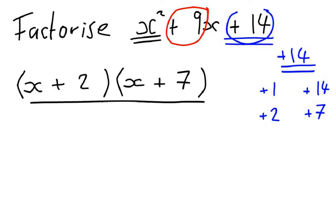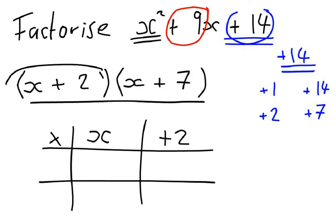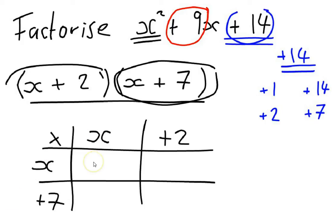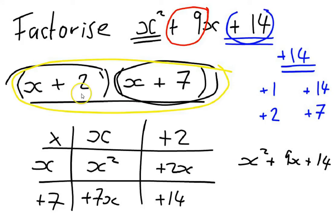Those are how we finish the brackets. I'd always get into the habit of double-checking by expanding. Multiplying x plus 2 by x plus 7 using the grid: x times x gives x squared; x times positive 2 gives plus 2x; positive 7 times x gives plus 7x; and positive 7 times positive 2 gives plus 14. Collecting like terms gives x squared plus 9x plus 14 — the same as what we started with. So our two brackets are x plus 2 and x plus 7.